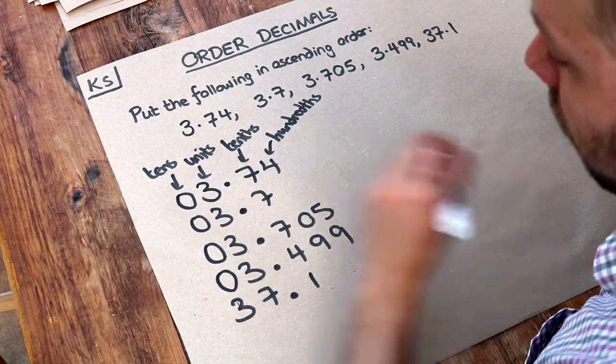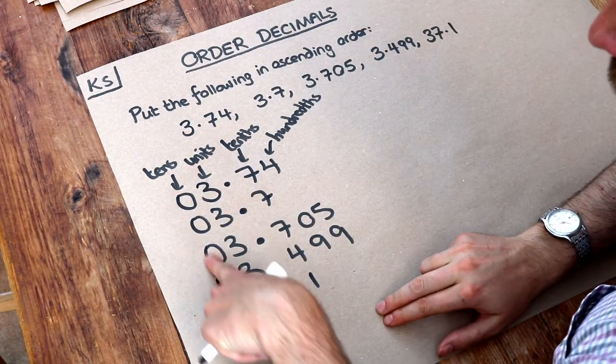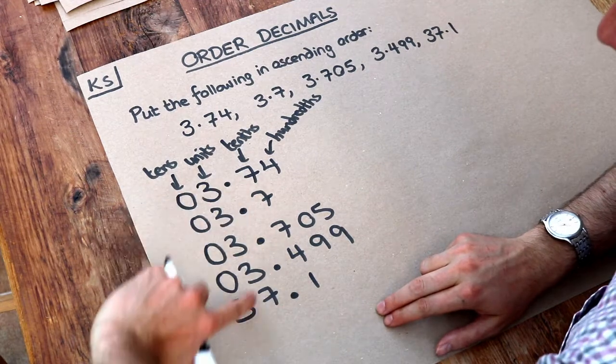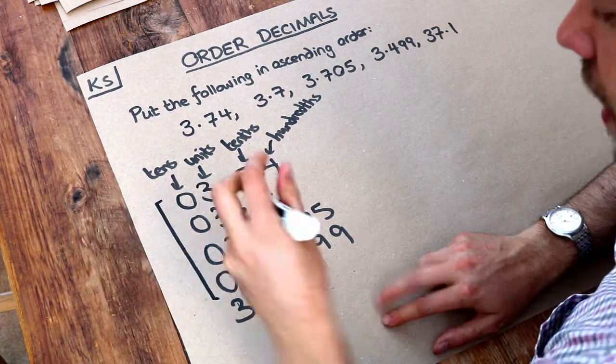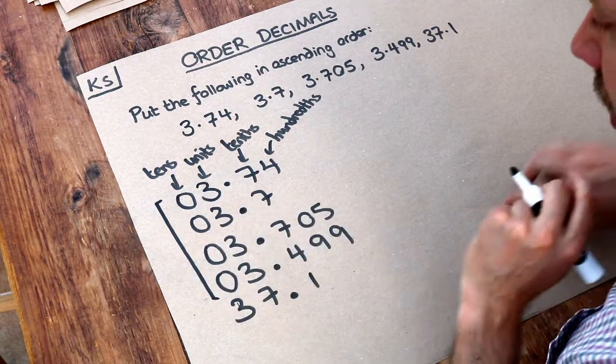So we want the smallest one, we look at the tens digit, which of these is the smallest? Well zero is smaller than three, so it's going to be these four first, and then the 37.1 is going to go last.